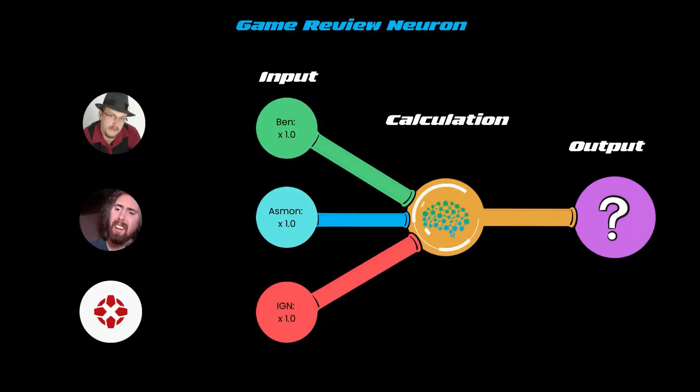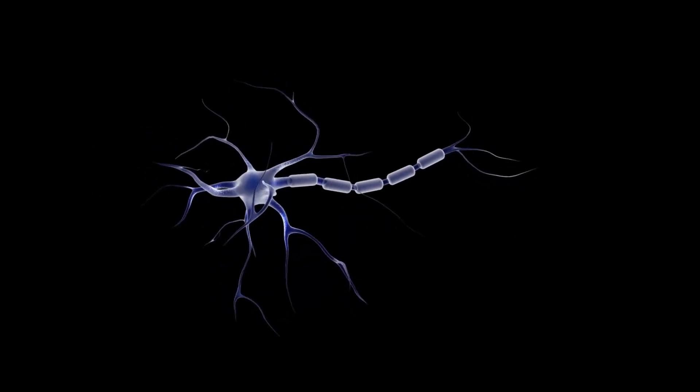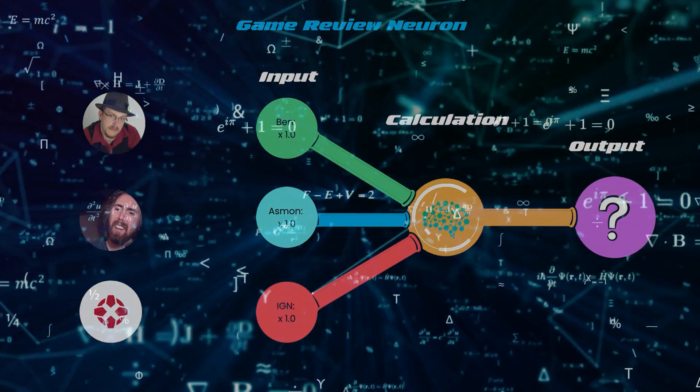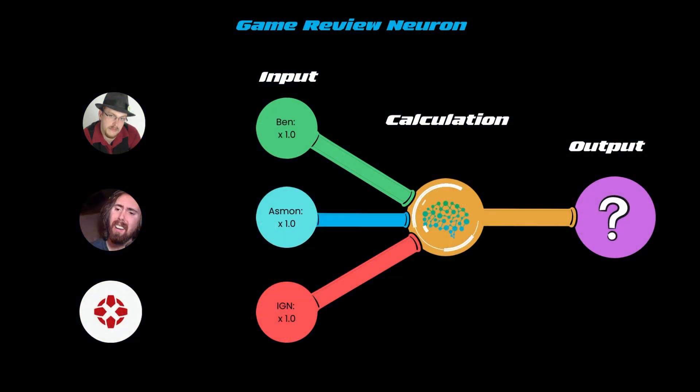Each one of these will rate a game anywhere from a score of 1 to 10. In this system we have a single artificial neuron. Each of the game critics' ratings are entered on the input side, some calculations are done in the neuron, and we will get a single output. In this case, it's the overall rating of a video game.